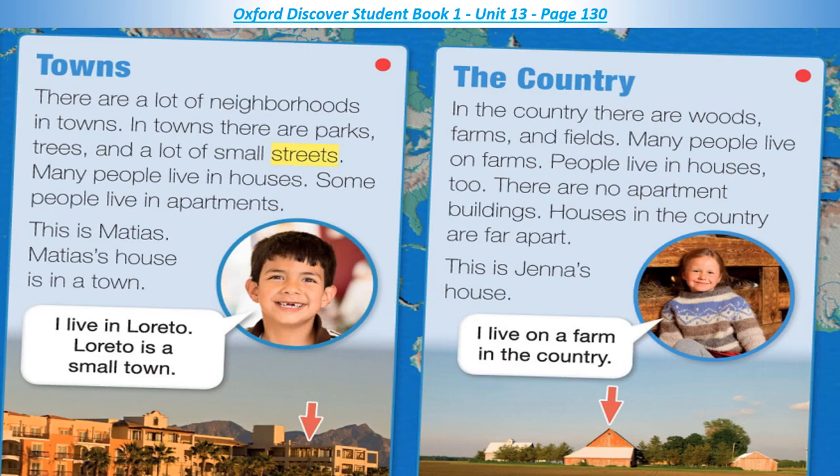There are a lot of neighborhoods in towns. In towns, there are parks, trees, and a lot of small streets. Many people live in houses. Some people live in apartments. This is Matias. Matias' house is in a town. I live in Laredo. Laredo is a small town.